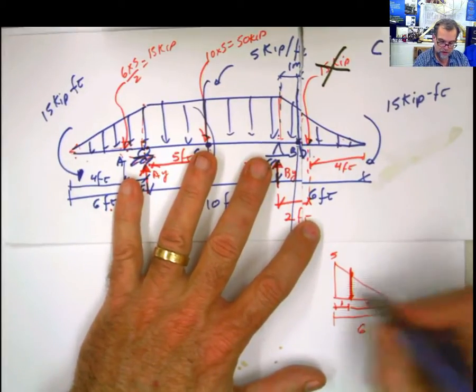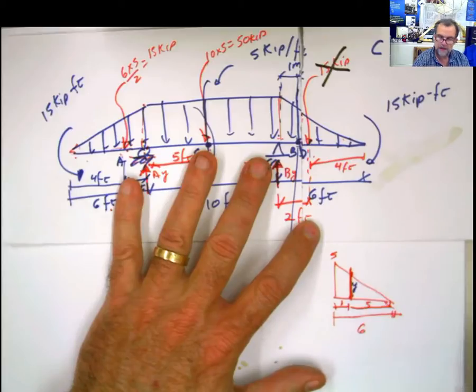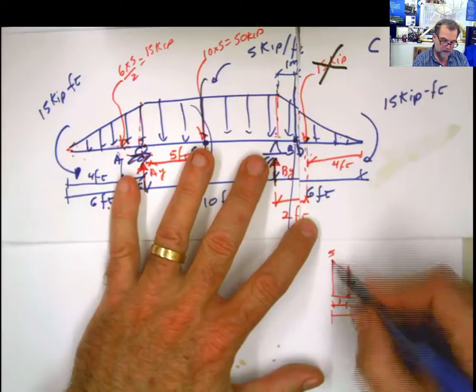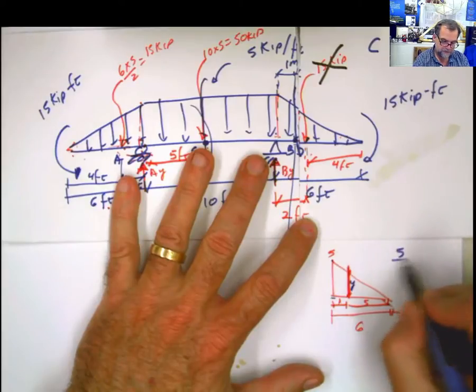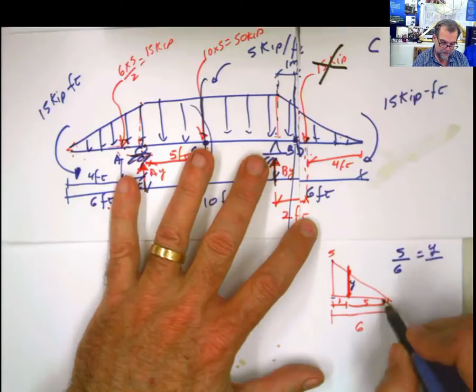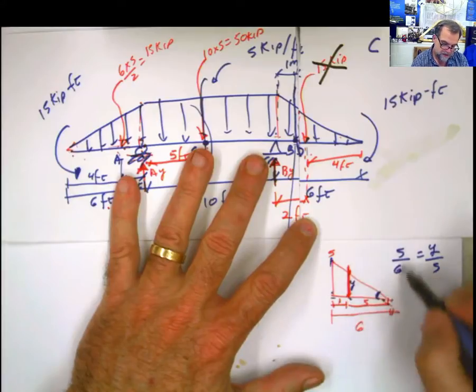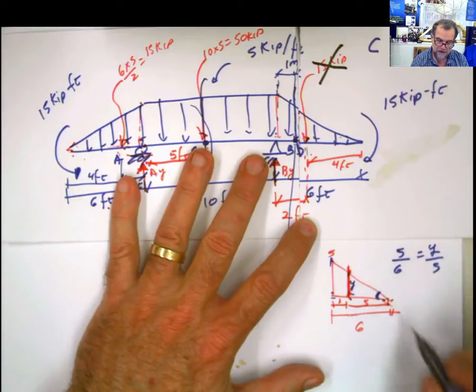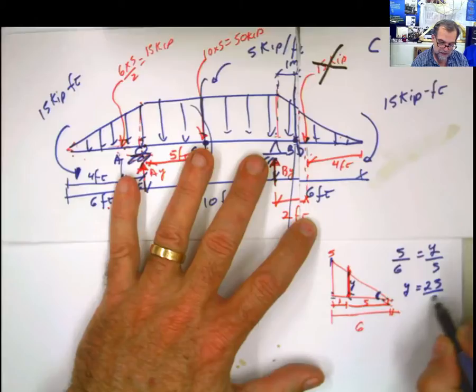This is the height that I'm looking for. I'm going to call it y. And you say, well, 5 is up to 6 as y is up to 5. Or you can say the tangent of this angle is the same. What is the tangent of this angle? 5 divided by 6. But the tangent of this angle is also y divided by 5. That's why you have it like that.